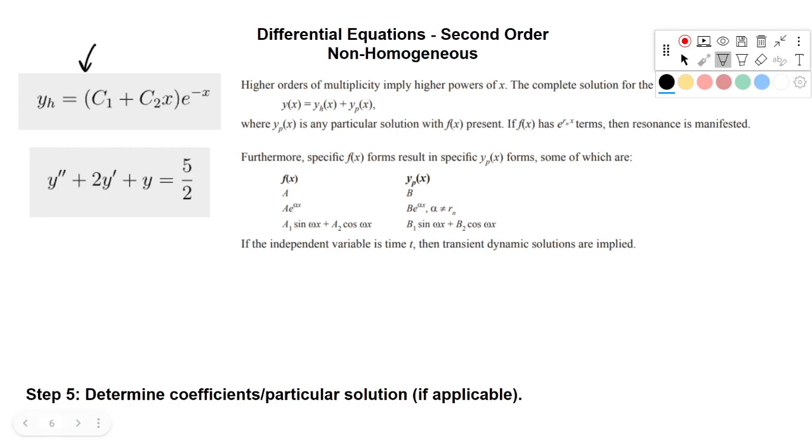So here we have our homogeneous solution up top. And below it, we have our original equation with our original forcing function. You can see it's 5 over 2 now, because remember, we had to divide everything by the 2 that was in front of the highest order. So to solve for the particular equation, what you need to do is you need to assume that y is of the form of your equation. And you could use this chart. This is from the reference handbook.